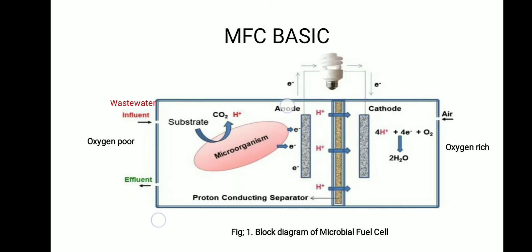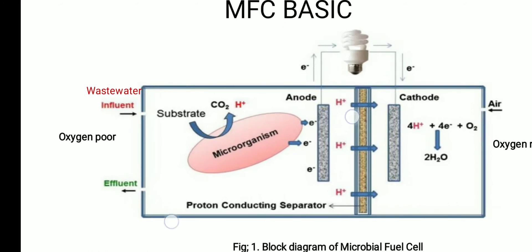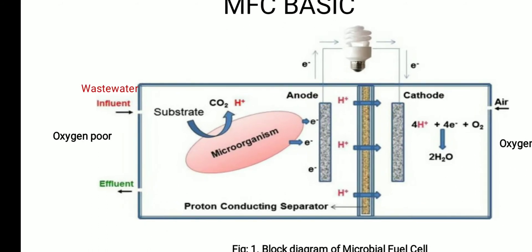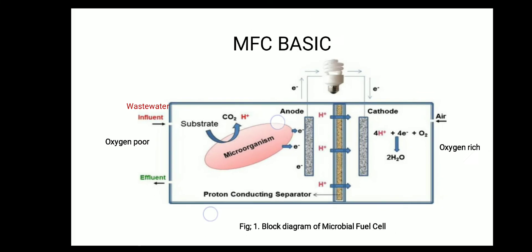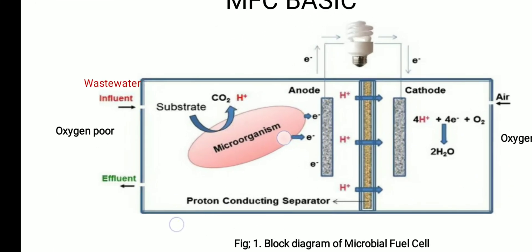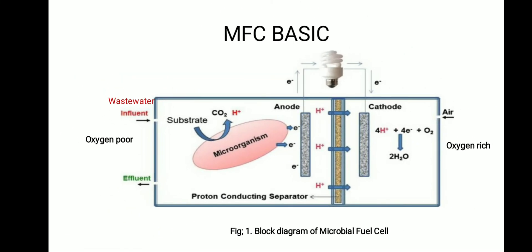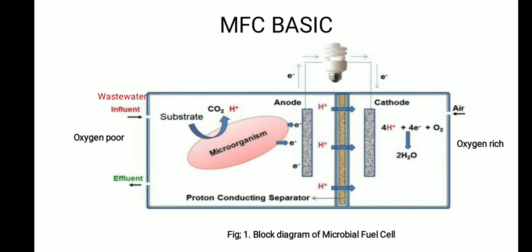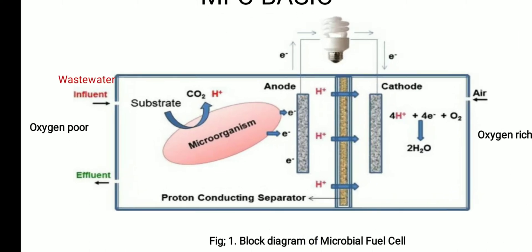As you can see in this picture, this is the microbial fuel cell block diagram. The left-hand side is the anode chamber, and the right-hand side is the cathode chamber. The anode chamber is filled with organic materials as well as microorganisms. The microorganism digests the organic material and produces electrons and protons. Electrons flow through the external circuit, and protons pass through the proton exchange membrane.